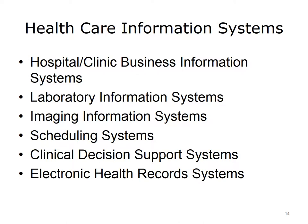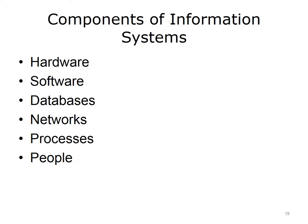Computer-based information systems are complex. Hardware includes physical pieces such as servers, desktop computers, laptops, printers, scanners, monitors, barcode readers, and more. Software includes everything from operating systems to application software, which can be developed in-house, purchased, or purchased and customized. Databases are collections of organized data that store data based on relationships, making retrieval easier. Networks connect hardware components, allowing software and databases to connect and work together.